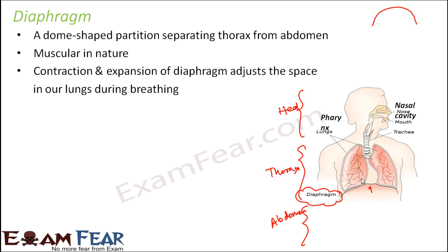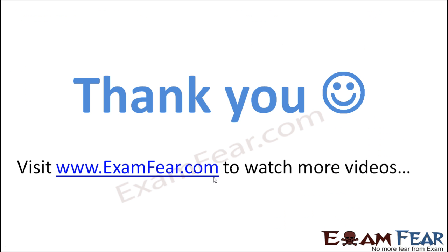If the diaphragm moves up, the space within the thoracic cavity reduces; if it moves down, the space increases. Contraction and expansion of the diaphragm adjusts the space in our lungs during breathing. When we breathe in, the diaphragm moves down to create more space for the incoming air. When we breathe out, the diaphragm moves up, making the lungs smaller, and less space is needed. This movement of the diaphragm plays a very important role during breathing in and breathing out.